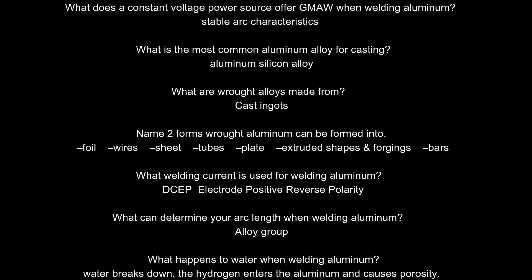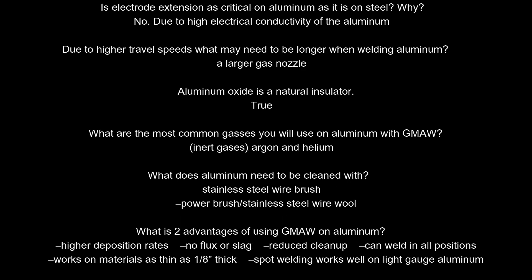What can determine your arc length when welding aluminum? Alloy group. What happens to water when welding aluminum? Water breaks down; the hydrogen enters the aluminum and causes porosity. Is electrode extension as critical on aluminum as it is on steel? No — due to the high electrical conductivity of aluminum and higher travel speeds. What may need to be longer when welding aluminum? A larger gas nozzle. Aluminum oxide is a natural insulator — true. What are the most common gases used on aluminum with GMAW? Inert gases: argon and helium.